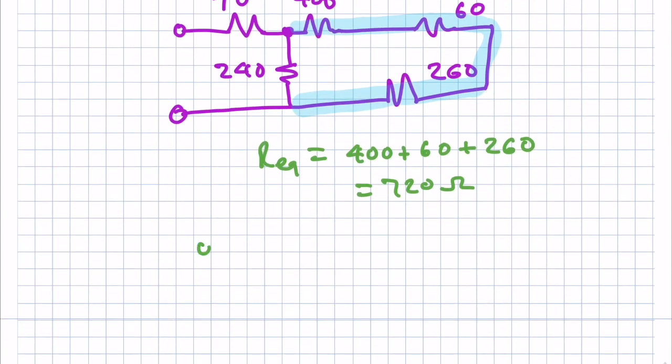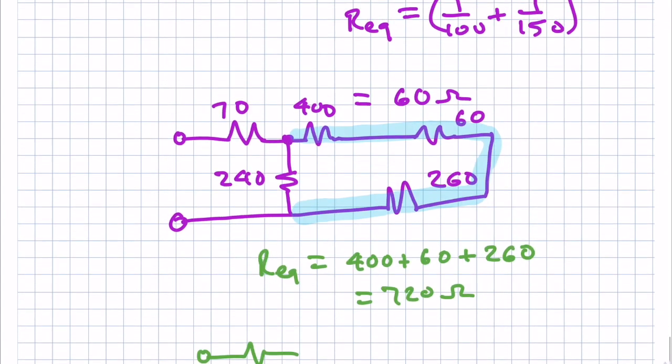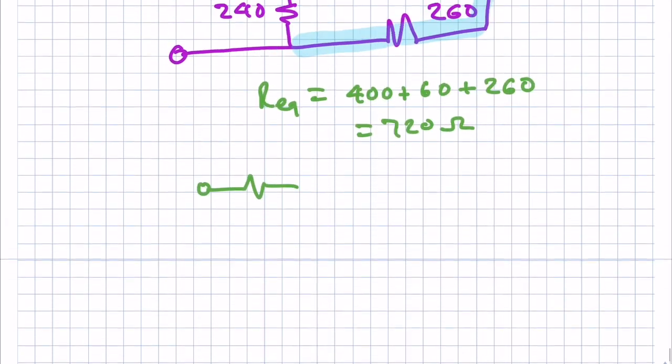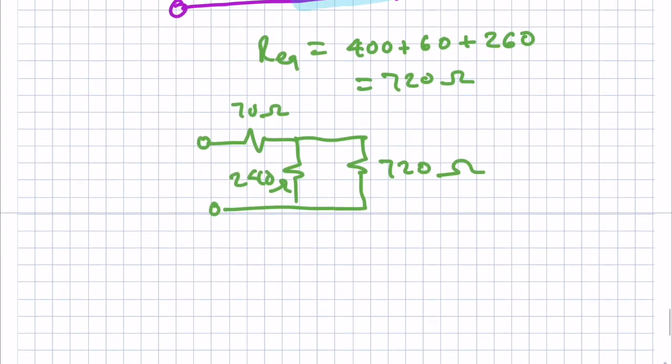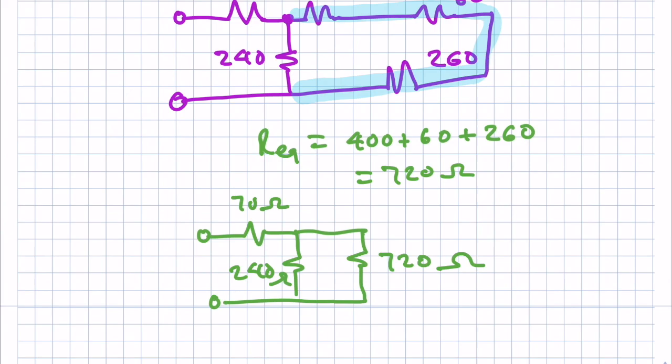So now what my circuit looks like is, I take the original 70 and the 240, and I replace that with 720. Okay. And I look at that, and I say, oh, these two have the same voltage across them, so those are in parallel.